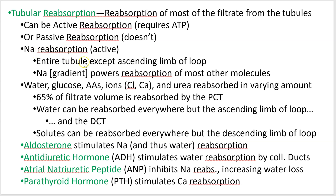Sodium reabsorption takes place everywhere except one little spot: the ascending limb of the loop. So on the way back up that nephron loop, you're not going to absorb any sodium. We get sodium into our tissues and blood, and then we start drawing water, glucose, amino acids, other ions, and some urea back.